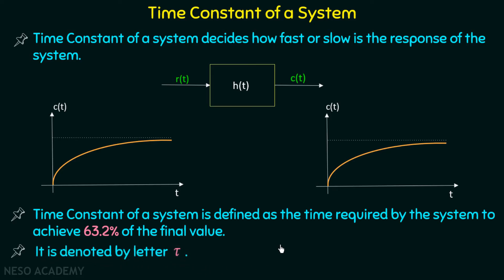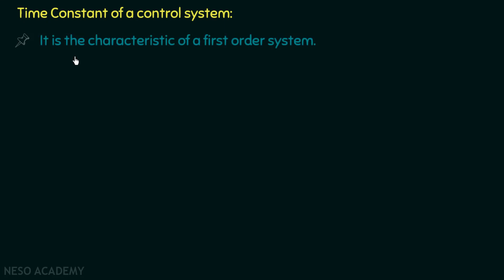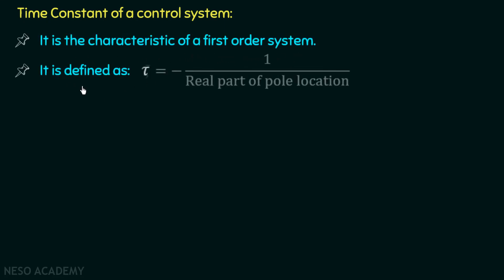Now we will define the time constant of a control system. The time constant is a characteristic of a first order system, and it is defined as tau equal to minus 1 over the real part of the pole location.